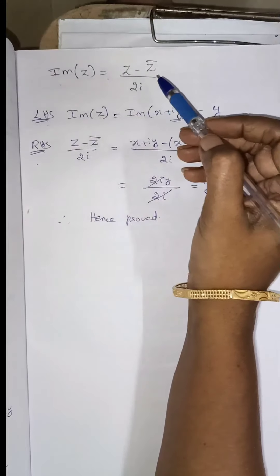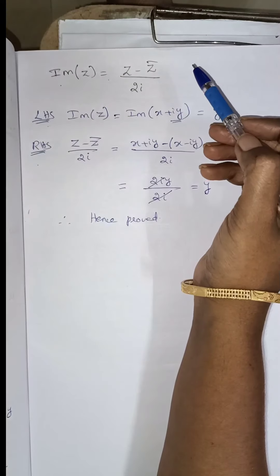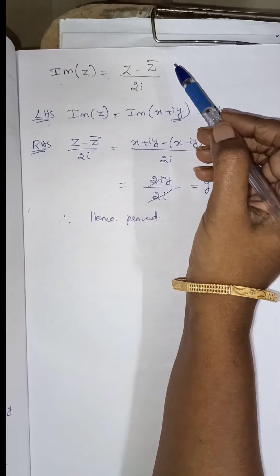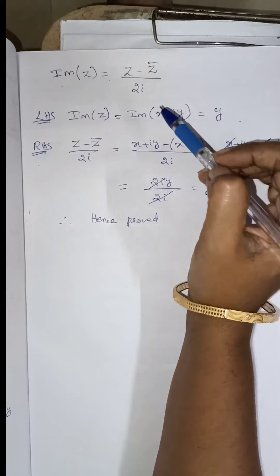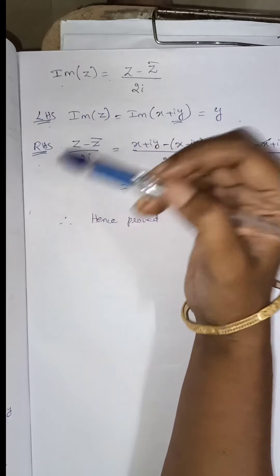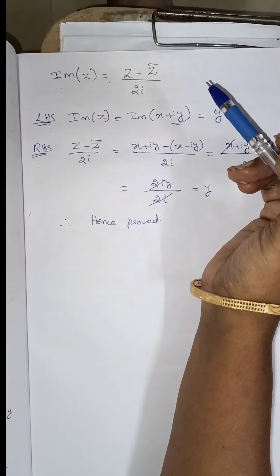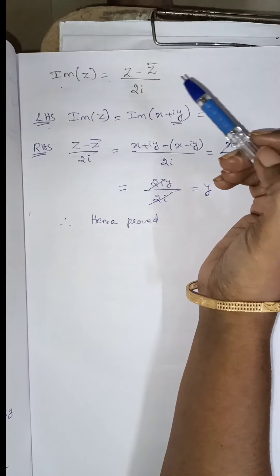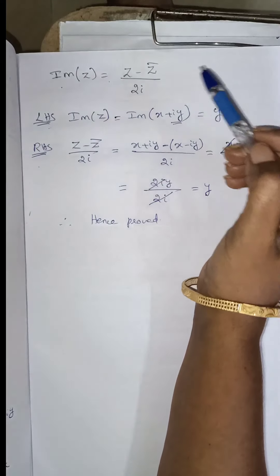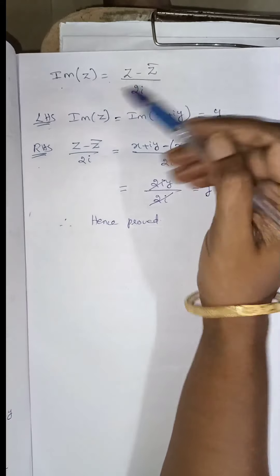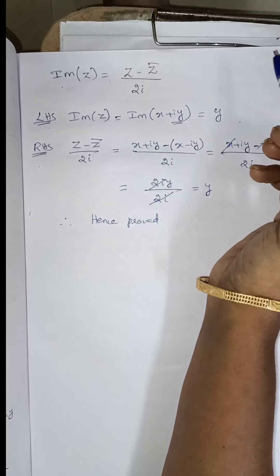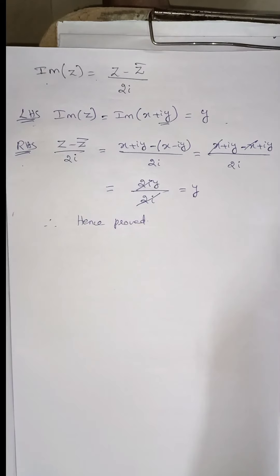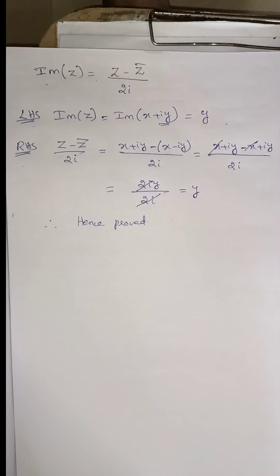So in the properties we use these formulas, and this is an important property. We worked out question number 5 completely. OK children, thank you.